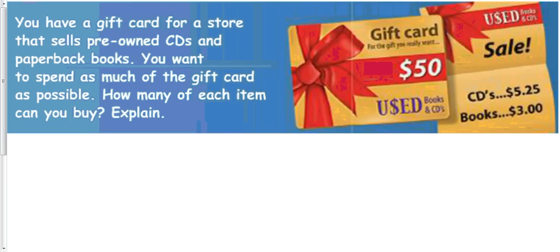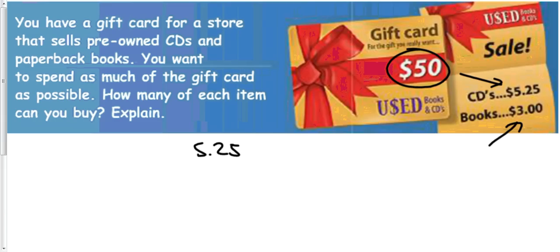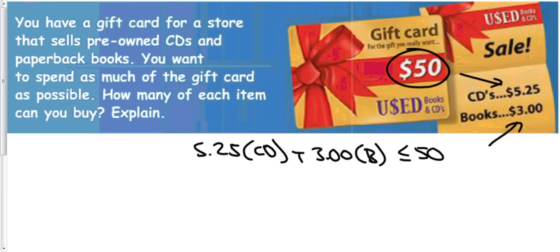Let's do a quick warm-up problem. You have a gift card for a store that sells pre-owned CDs and paperback books. You want to spend as much of the gift card as possible. How many of each item can you buy? There are really a lot of different solutions to this. Setting up a basic equation: $5.25 for CDs, $3 for books, and we know we want to spend no more than $50. So: $5.25 times CDs plus $3 times books has to be less than or equal to $50.